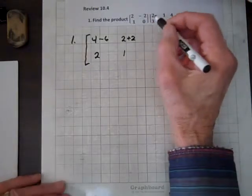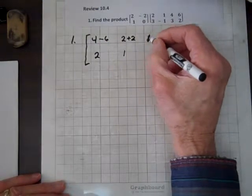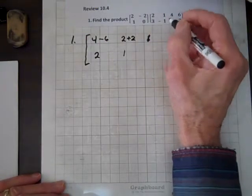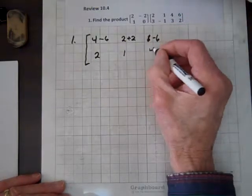So we keep up this process. 2 times 4 is 8, and minus 2 times 3 is minus 6, and 1 times 4 is 4.